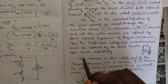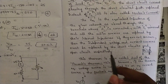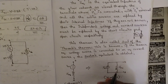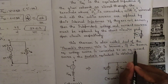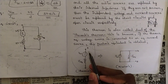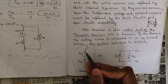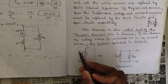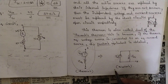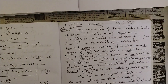For the equivalent impedance Z equivalent, which we already covered in Thevenin's theorem: it is the equivalent impedance of the given network as viewed through the terminals where ZL is connected, with ZL removed and all active sources replaced by their internal impedances. Independent voltage sources are replaced by short circuits and current sources by open circuits. This theorem is also called the dual of Thevenin's theorem — if the Thevenin equivalent voltage source is converted to an equivalent current source, Norton's equivalent is obtained.